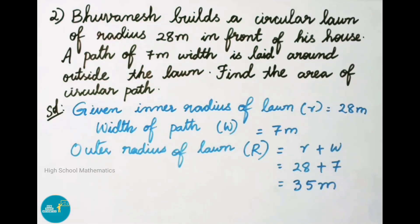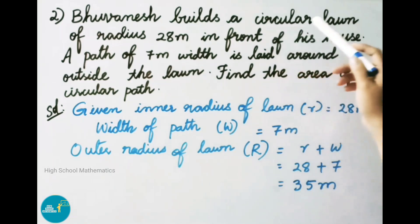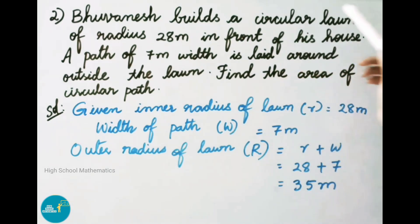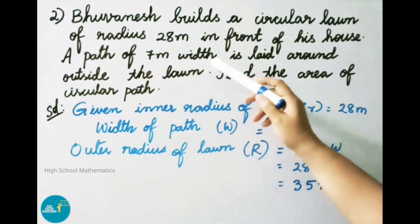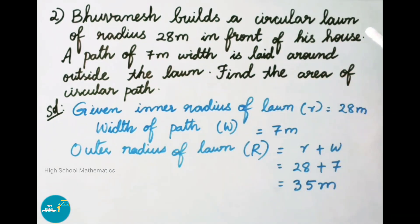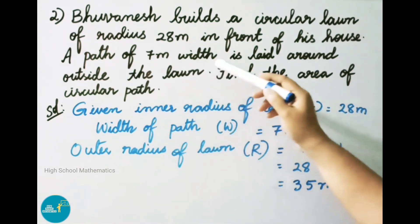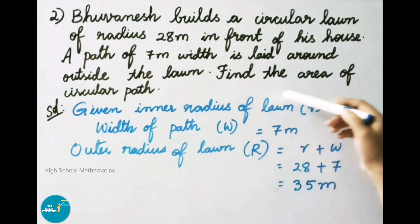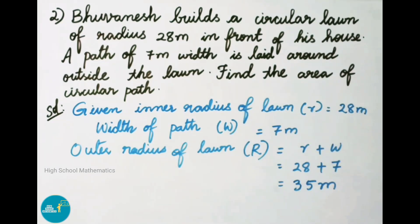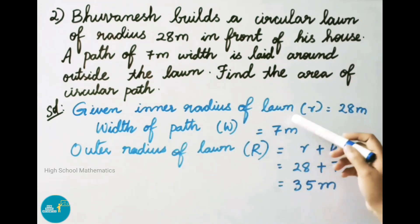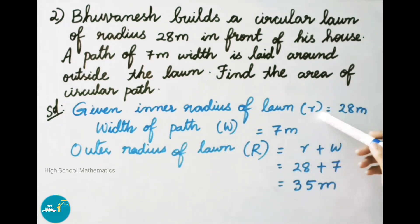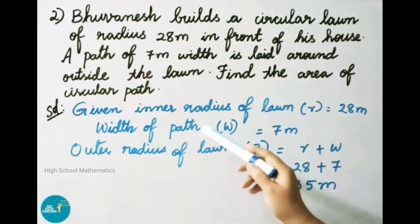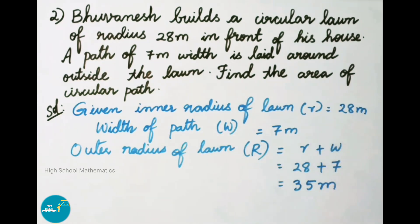Question number 2: Bhuvanesh builds a circular lawn of radius 28 meters in front of his house. A path of 7 meters wide is laid around outside the lawn. Find the area of the circular path. Given: inner radius of lawn, small r = 28 meters; width of path w = 7 meters.